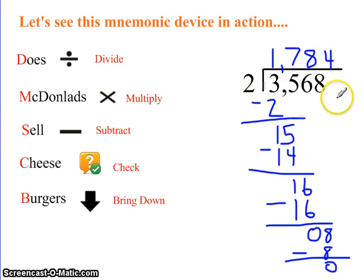So 3,568 divided by 2 is 1,784. And if you were to ballpark this and round this to 4,000, 2 into 4,000 would be 2,000. So we know our answer is within our ballpark range.